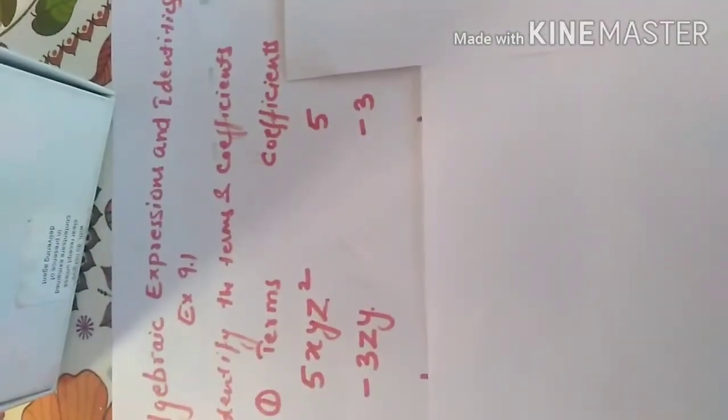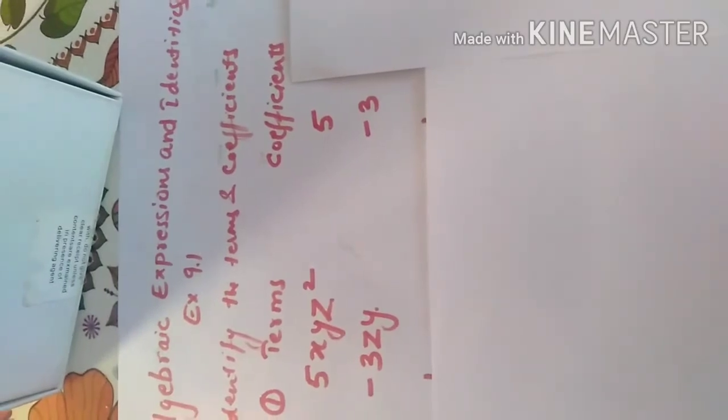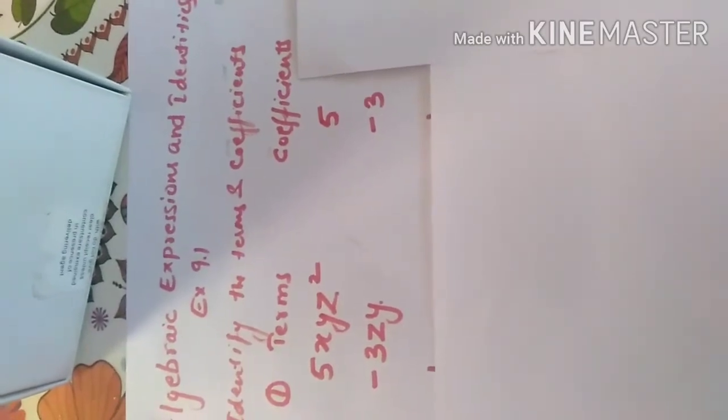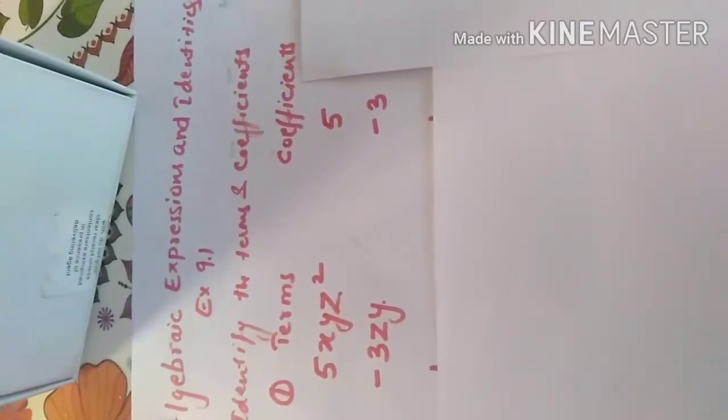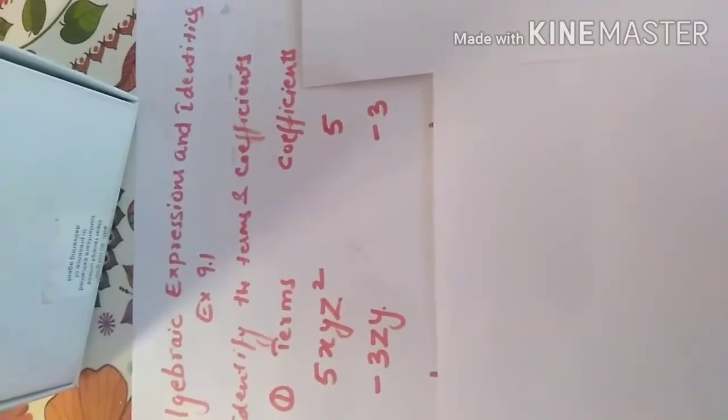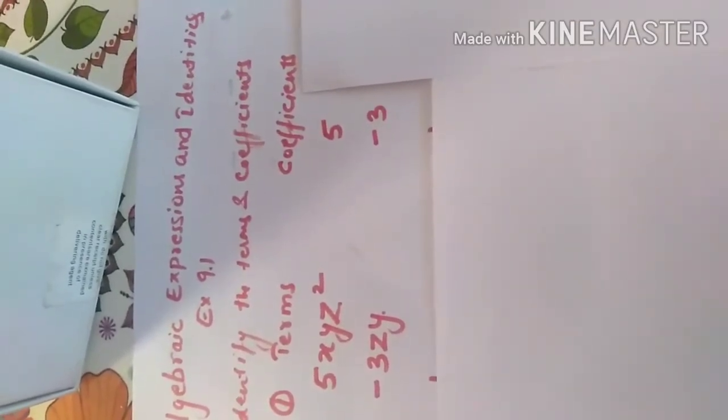This is the first question where the terms are given: 5XYZ square minus 3YZ. Here two terms are there. 5XYZ square and minus 3ZY. And the respective coefficients are 5 and minus 3.